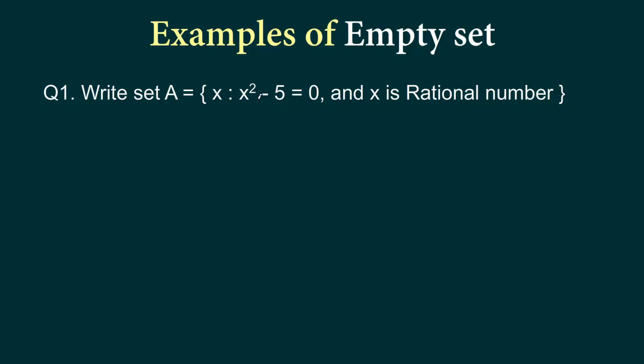So first let's solve this equation and see what we get. So we have x squared minus 5 equals 0. Now we can write this as x squared minus square root 5 whole square equals 0.